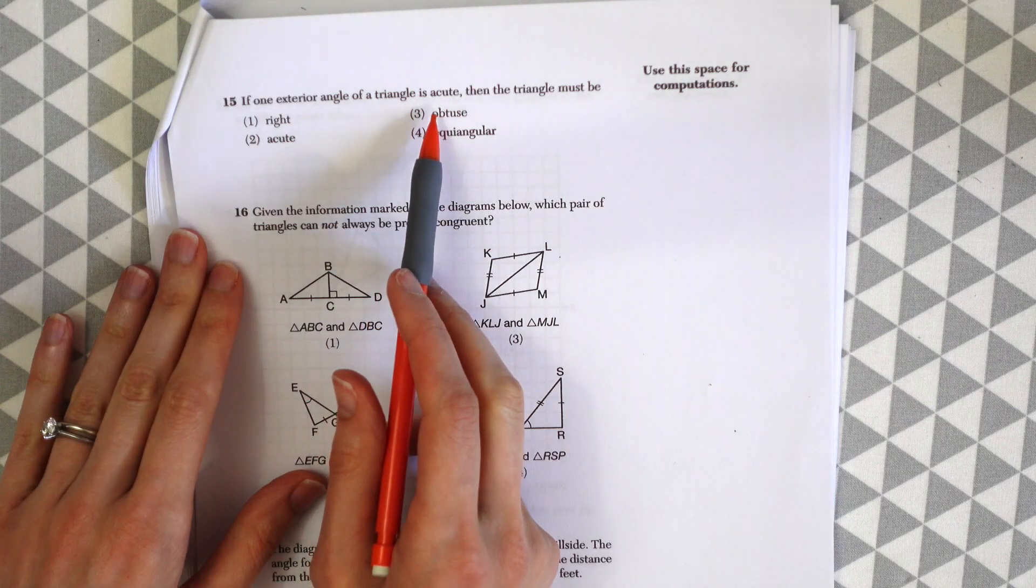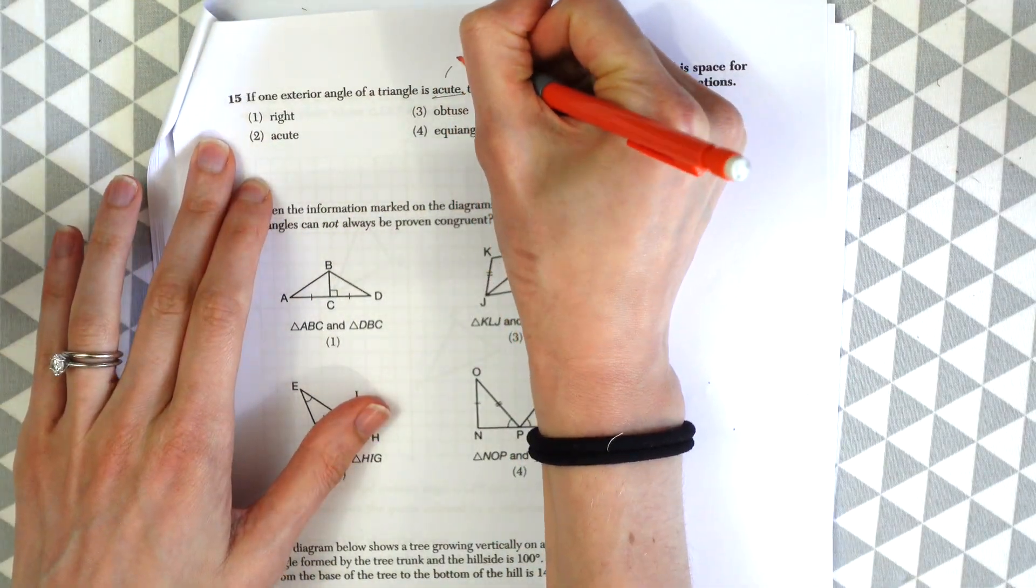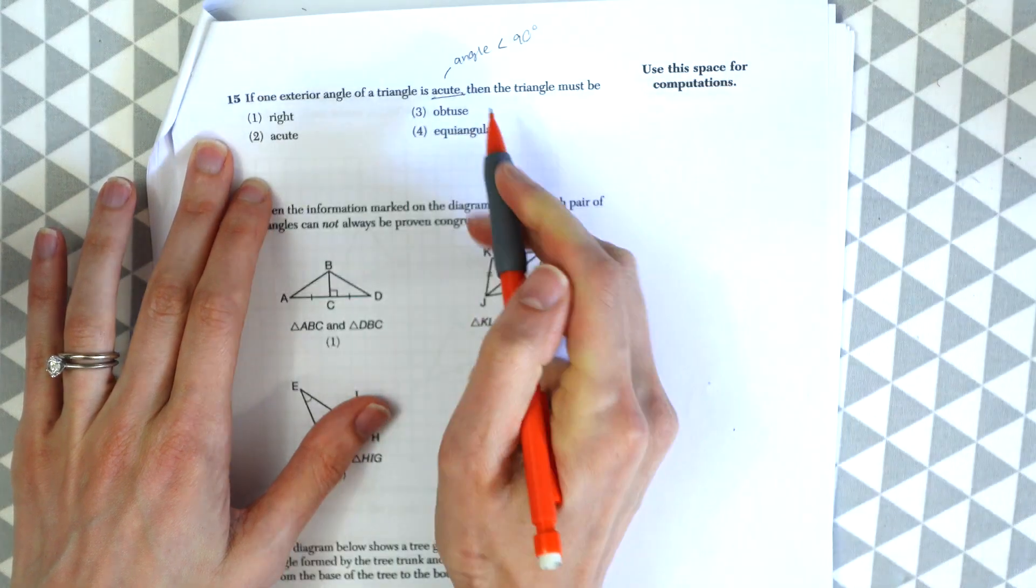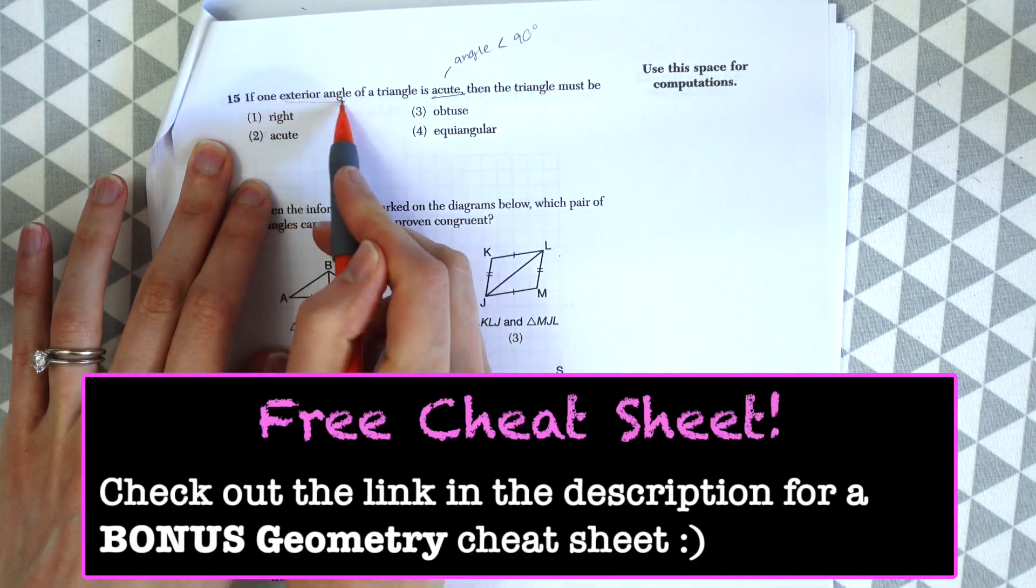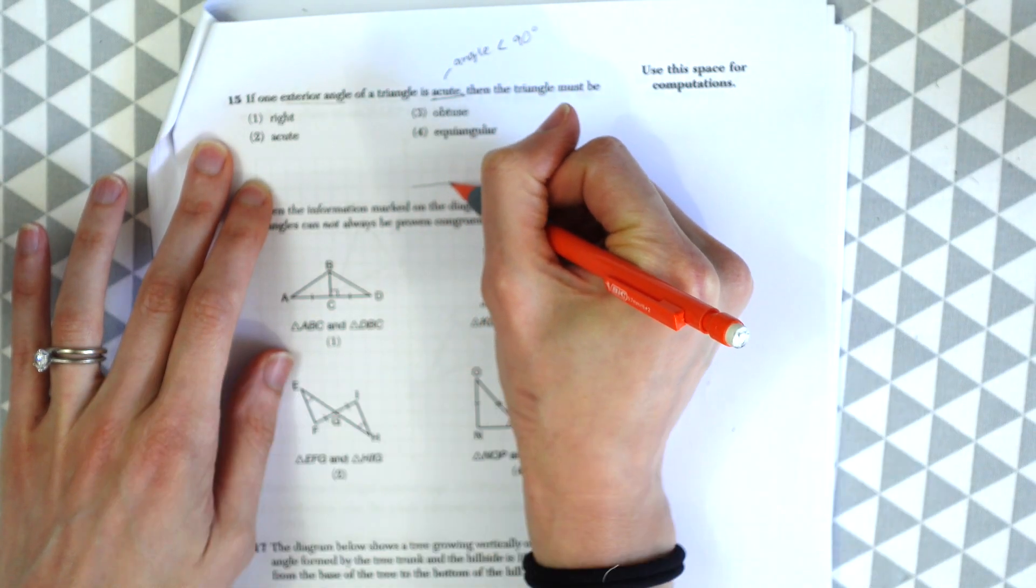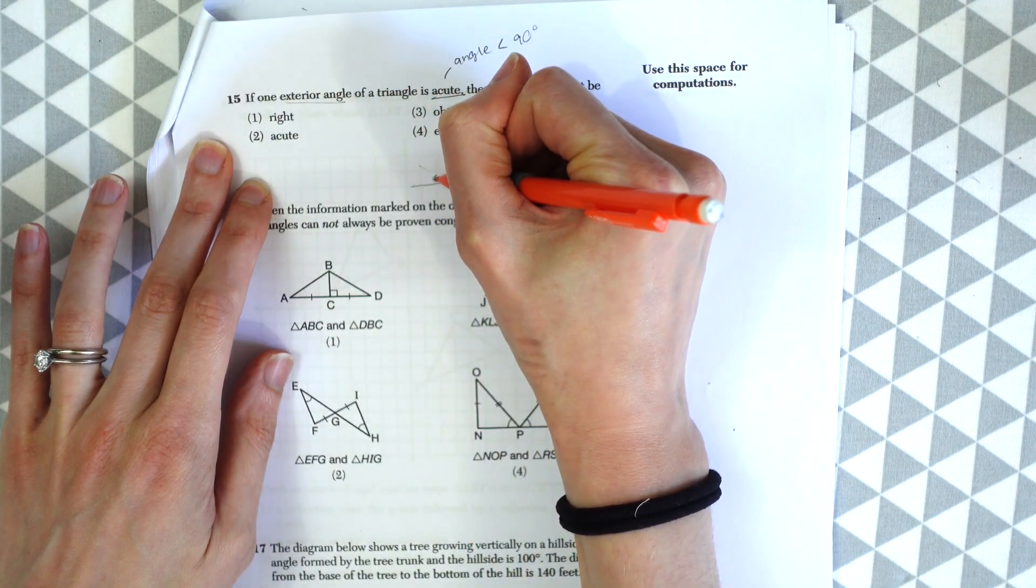Here is question 15. If one exterior angle of a triangle is acute, so that's always an acute angle that is less than 90 degrees, then the triangle must be. So we're saying we have an exterior angle, an outside angle of a triangle where it is acute. That little angle is going to look something like this.